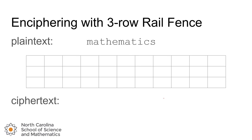A variation on the cipher is to use more than two rows. In this example we'll use three, but in general you can use as many as you'd like. The number of rows used acts as the key for this algorithm, changing the cipher text for the same plain text even though the process is the same.